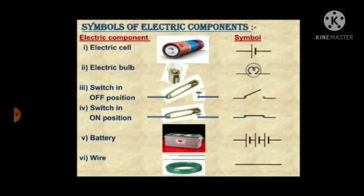Symbols of electric components. The electric components are: electric cell, electric bulb, switch in off position and switch in on position, battery, and wire. On the right side you can see the symbols of all the electric components.